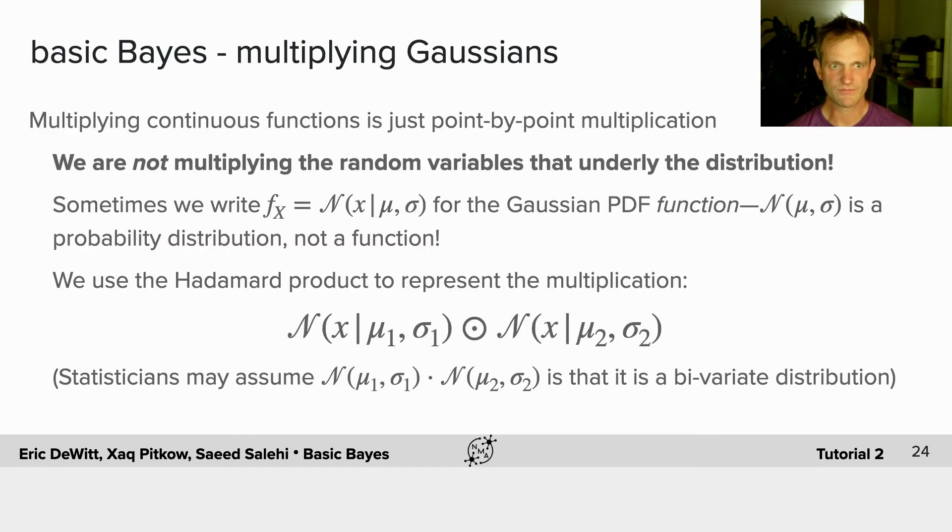Multiplying Gaussians. When we multiply Gaussians, we're just multiplying two continuous functions, and this is just point-by-point multiplication. Note we're not multiplying the underlying random variables.